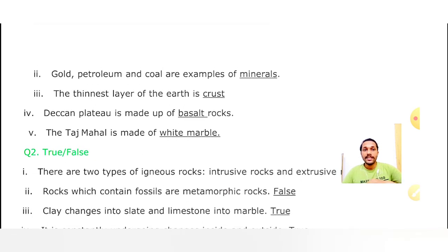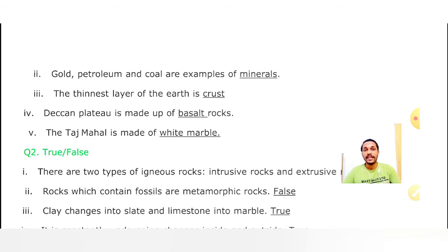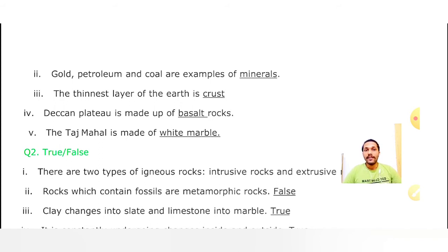Third True/False: Clay changes into slate and limestone into marble. Bilkul sahi drakha hai! Yeh hamari metamorphic rocks hain jo changed form mein bani hoti hain. Clay se hamare slate banti hai, aur limestone se marble banta hai. Clay jo hai woh slate mein badal jata hai, slate phir schist mein badal jata hai - yaad rakhe. Aur limestone marble mein badal jata hai. Yeh sab metamorphic rocks ke udaharan hain. Is question ka answer true hai.